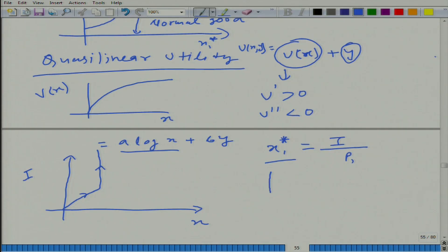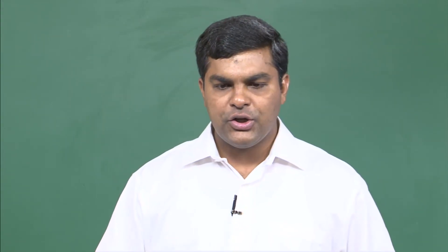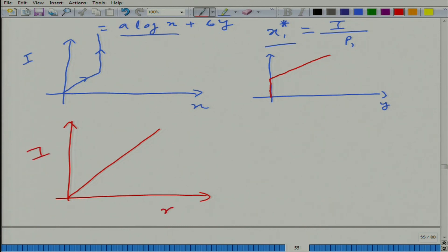How about good 2? For good 2, up to a certain income level it will be 0, and then it starts increasing linearly. For the Cobb-Douglas function, since x1* = a*i/p1, it is linearly increasing in income. So the Engel curve for Cobb-Douglas is a straight line through the origin — linearly increasing. We have now studied the effect of change in income on quantity demanded for both goods.